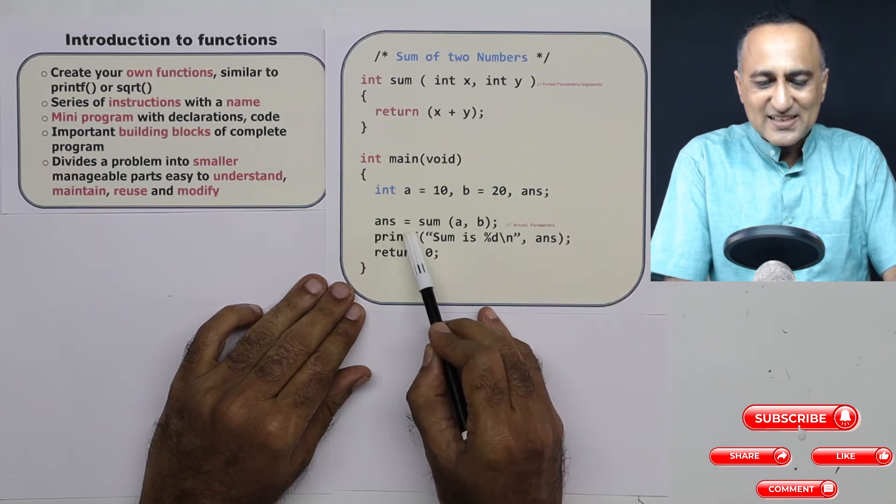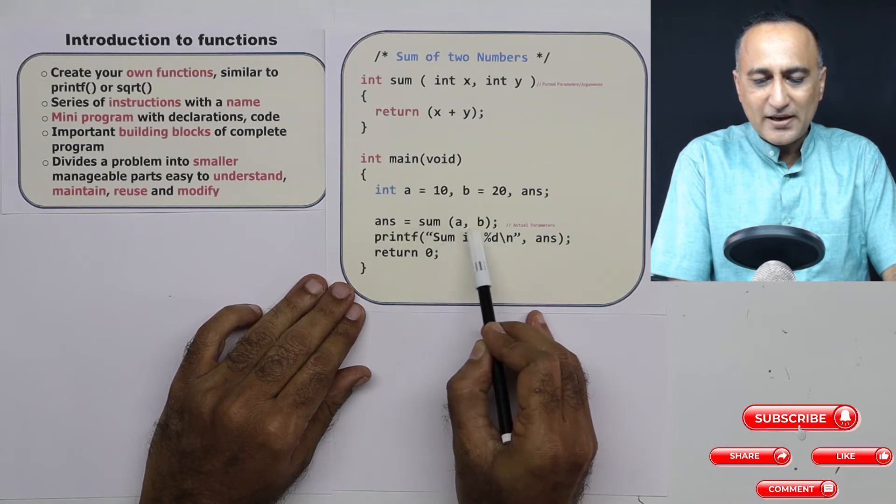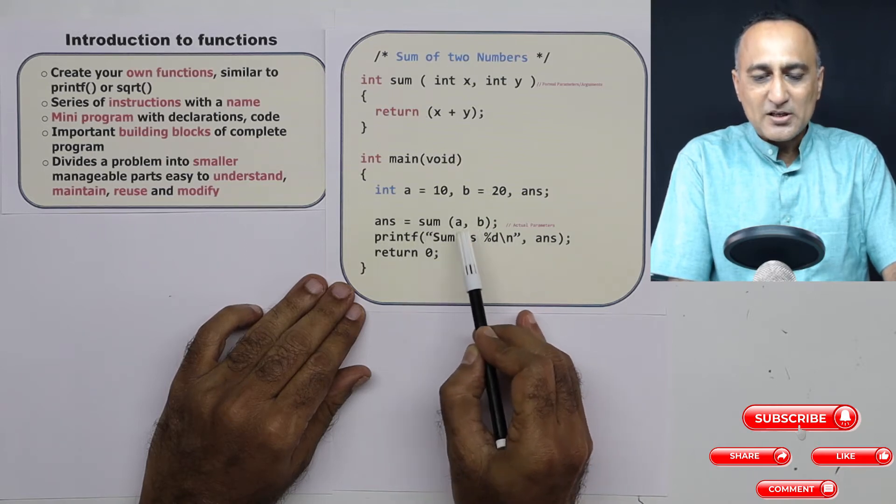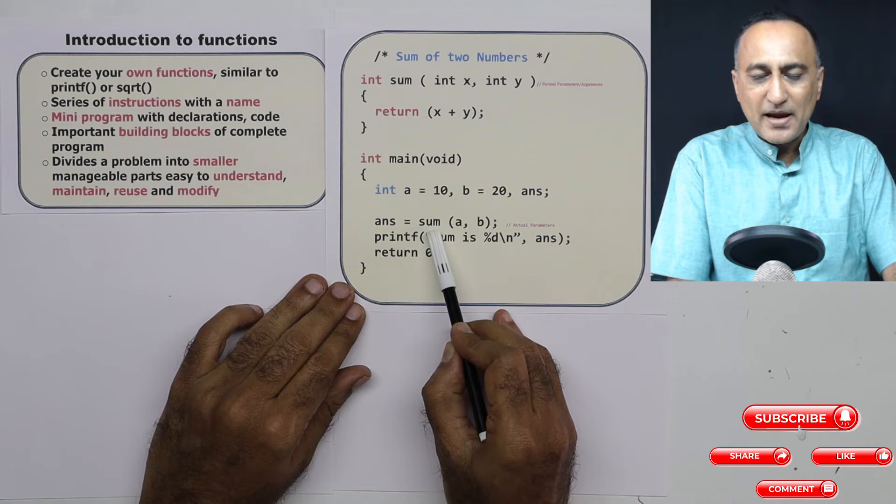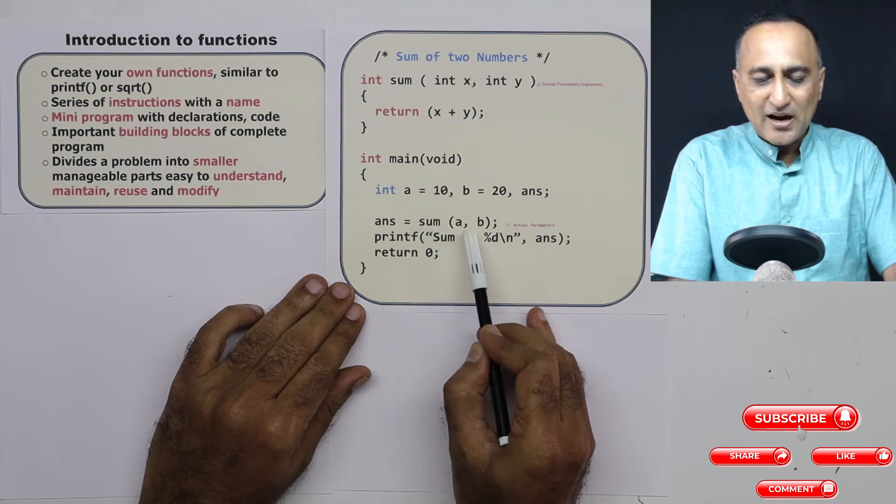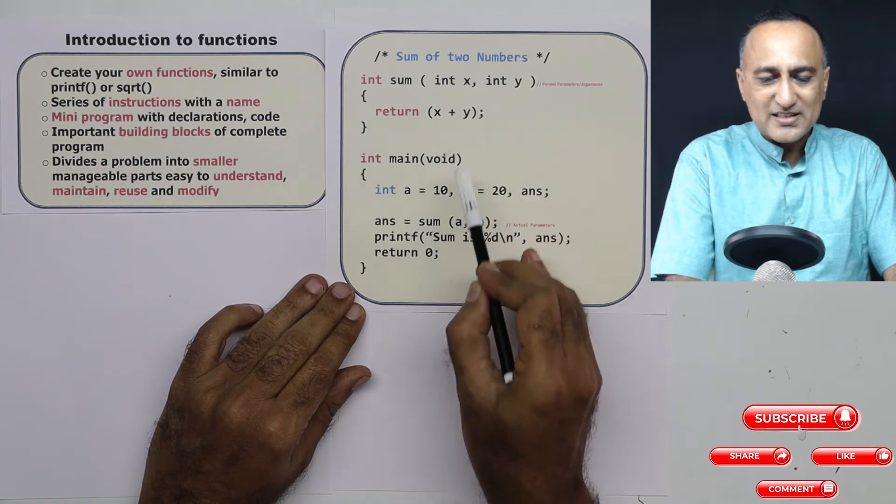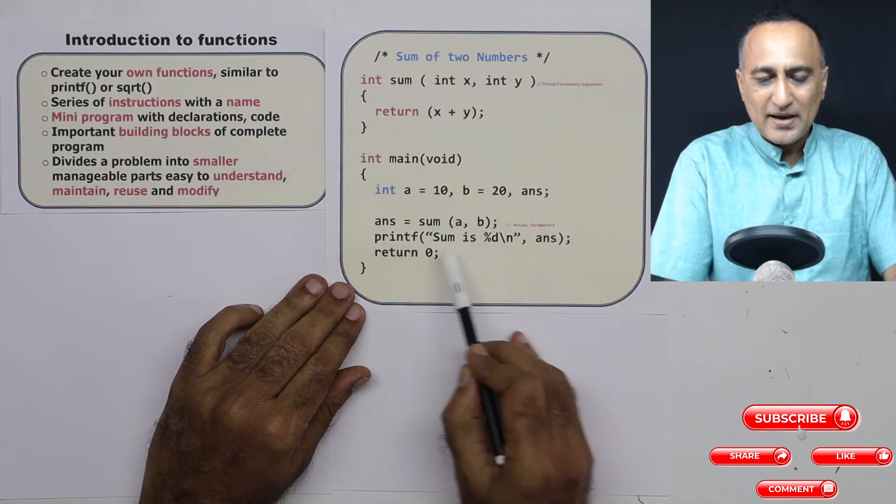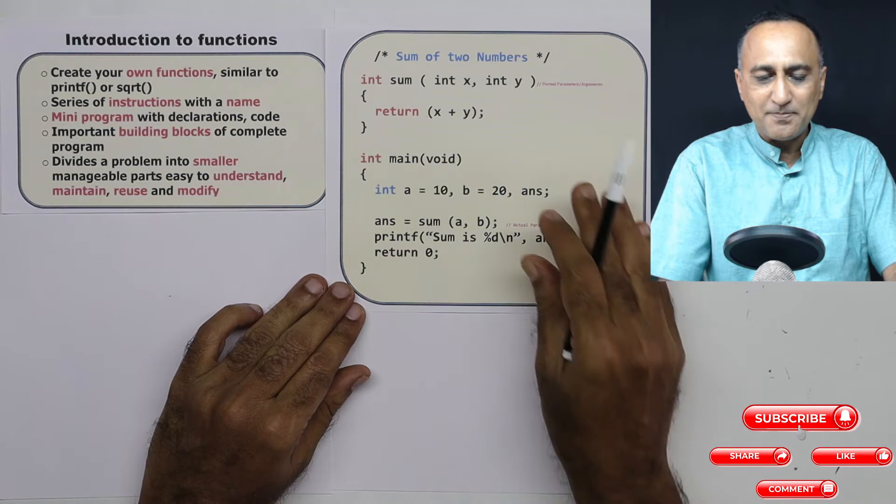Then I am saying answer is assigned the value sum of a comma b. So now sum happens to be a user-defined function. After the sum calculates the value of x plus y, I am printing the value of sum here.